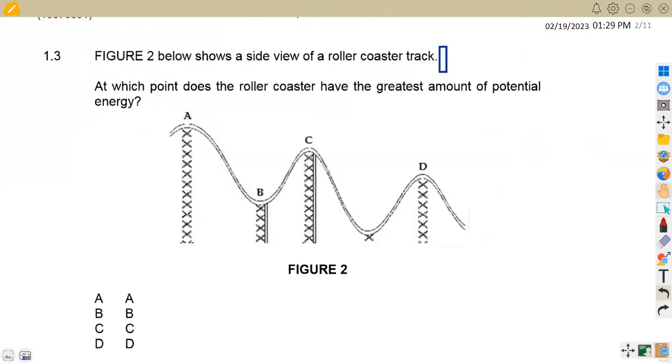On 1.3, Figure 2 shows a side view of a roller coaster track. At which point does the roller coaster have the greatest amount of potential energy? What determines potential energy? Remember it is given by MGH - the force due to gravity, which is the weight, and the height. The greater the height, the higher the amount of potential energy. If you increase the height, you are increasing potential energy because this is directly proportional. On point A, we have the highest height. That is where we're going to have the greatest amount of potential energy. So our answer is A.